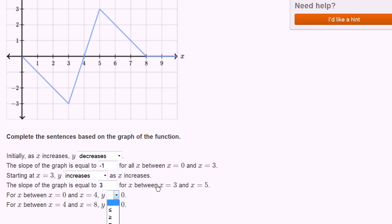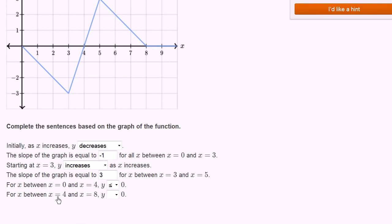For x between x equals 0 and x equals 4, y—let's see. We can pick greater than, less than, or equal to. So for x between 0 and 4, y is less than or equal to 0. Let's do less than or equal to 0. And then for x between x equals 4 and x equals 8, y is greater than or equal to 0.